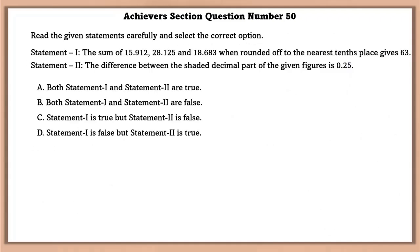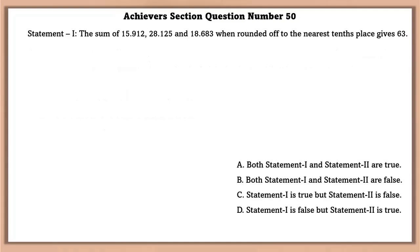Achievers section question number 50. Read the given statements carefully and select the correct option. Statement 1, the sum of 15.912 and 28.125 and 18.683. When rounded off to the nearest tenth place gives 63. Now, first, let's find the sum of these. The sum of this is equal to 62.72. When rounded off gives 63, so this is true. So, statement 1 is true.